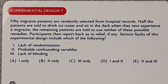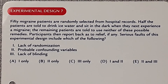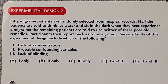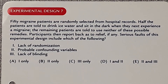Fifty migraine patients are randomly selected from hospital records. Half are told to drink ice water and sit in the dark when they next experience a migraine; the remaining patients are told to use neither remedy. Participants then report back as to any relief. The question asks which of the following are serious faults of this experimental design.